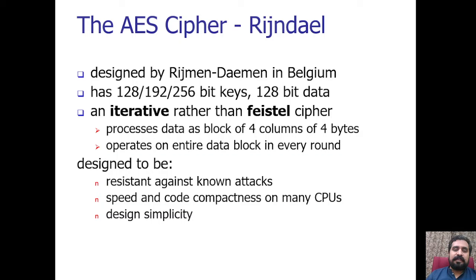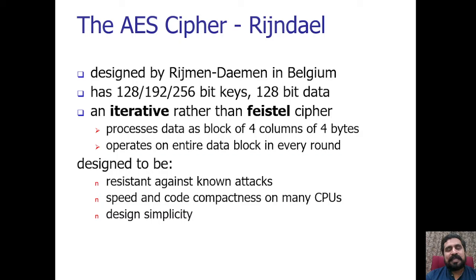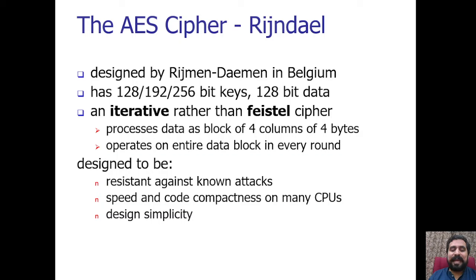AES is an iterative cipher rather than a Feistel cipher. In a Feistel cipher, the input is divided into two different halves. But in an iterative cipher, whatever input is received, we perform an iterative loop to process the complete input. It processes data as a block of four columns of four bytes, and operates on the entire data block in every round. AES is designed to resist differential and linear attacks, with simplicity across many CPU designs.